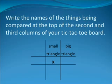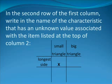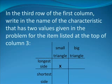Your tic-tac-toe board should now look like this. In the second row of the first column, write in the name of the characteristic that has an unknown value associated with the item listed at the top of column 2. This leads to the following. In the third row of the first column, write in the name of the characteristic that has two values given in the problem for the item listed at the top of column 3.